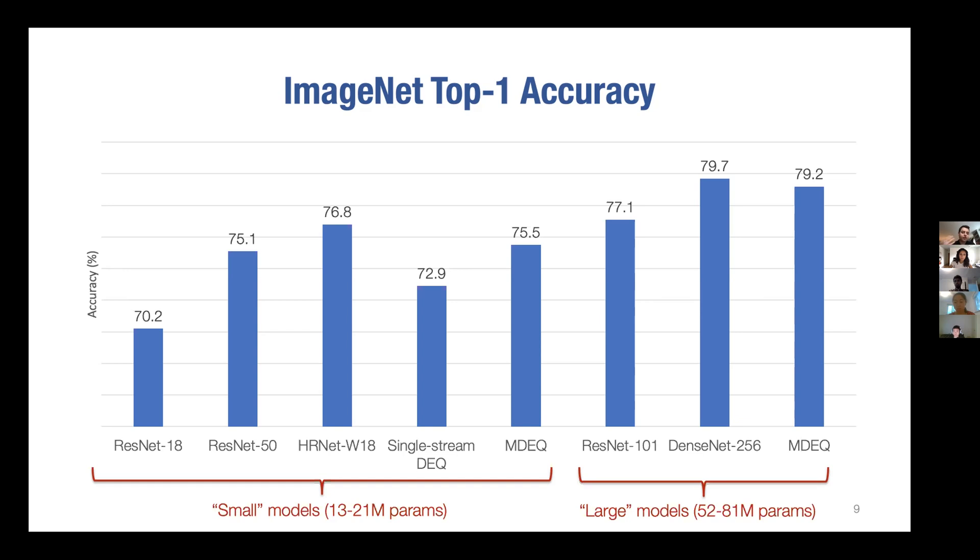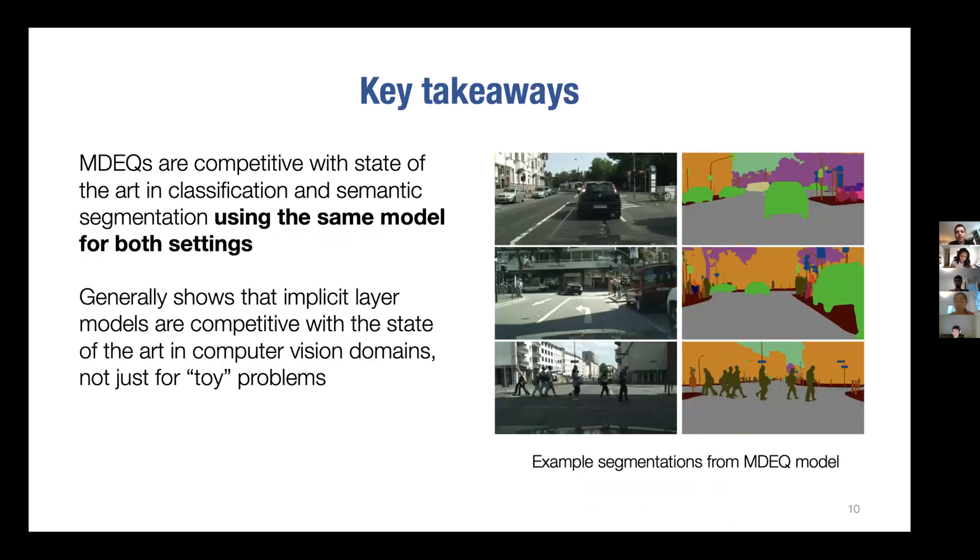Same is actually true for semantic segmentation. We're better than a lot of standard state-of-the-art architectures. The important point I want to make is that these models aren't just toy models, these things that can compute fixed points - they're actually competitive with state-of-the-art classification and semantic segmentation, importantly using the exact same model for both. There's no need to create a different model for different tasks. They use the same model for both, and they generally show that this notion of using what we call an implicit layer - because this layer is not defined explicitly, it's defined implicitly in terms of a condition it wants to satisfy - this is the first indication that these things really are competitive with the modern state of the art.